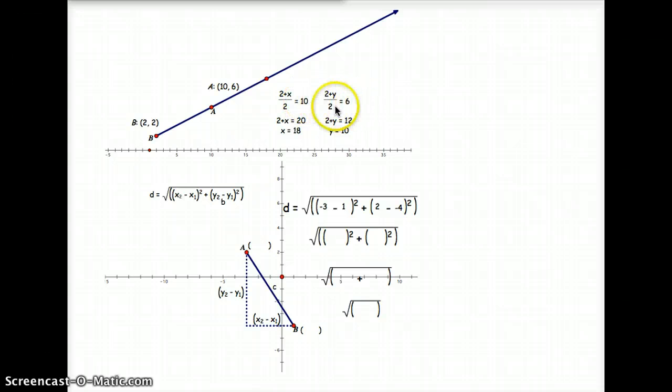Again, I multiply by the denominator, which happens to be 2 here. That eliminates this 2, leaving me with 2 plus y. Make sure you multiply this side by 2 as well. Equals 12.